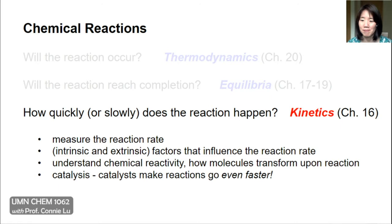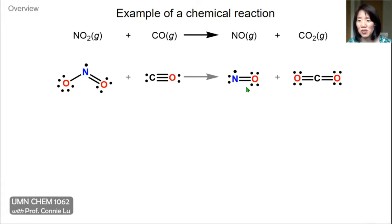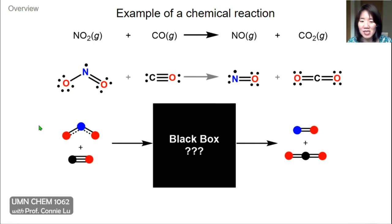We can also add a catalyst to reactions to help them go even faster. Here's an example of a chemical reaction — a balanced equation where our reactants are nitrogen dioxide and carbon monoxide and our products are nitric oxide and carbon dioxide. The Lewis structures are shown here. You'll notice that both nitrogen dioxide and nitric oxide are actually nitrogen radicals. You've learned how to balance chemical reactions before, but maybe you've also wondered about how the reaction actually happens — what really goes on inside this black box as the two reactant molecules transform into products.